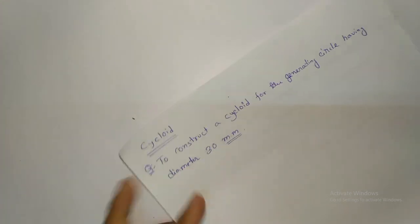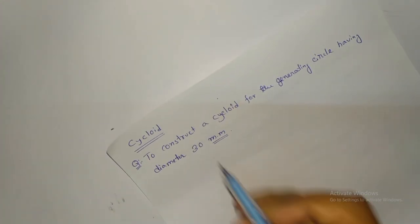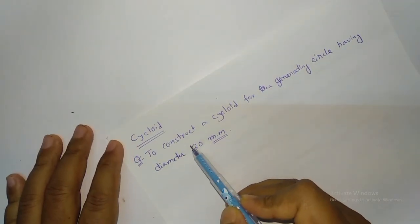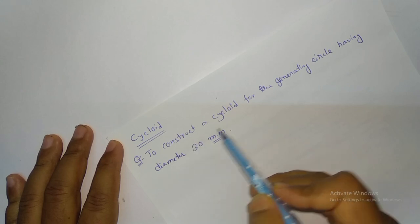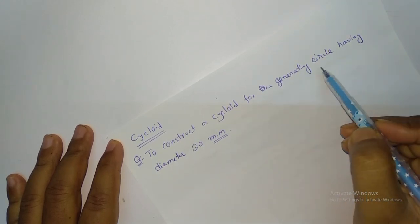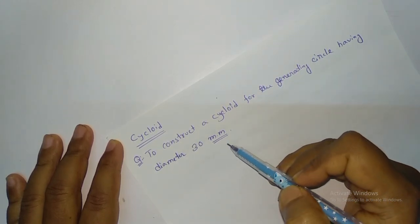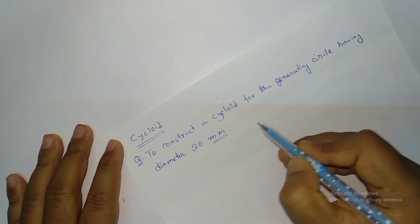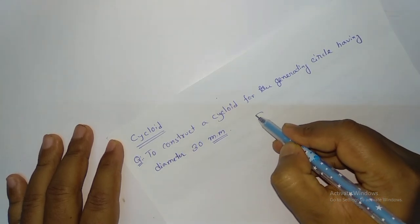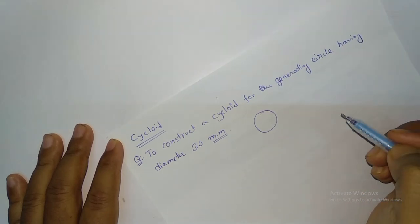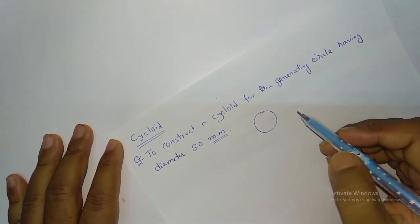So this is the question: to construct a cycloid for the generating circle having diameter 30 mm. So your generating circle — suppose this is your generating circle — this circle has a diameter of 30 mm.